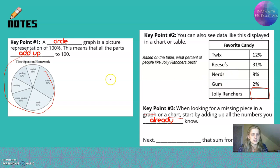So looking at this, I know 12% is Twix, I know 31% is Reese's, I know 8% is nerds, and 2% is gum. Add that all up, I'm gonna start here with my friendly numbers, that's 10. These two together, that's 43, plus 10 is 53.